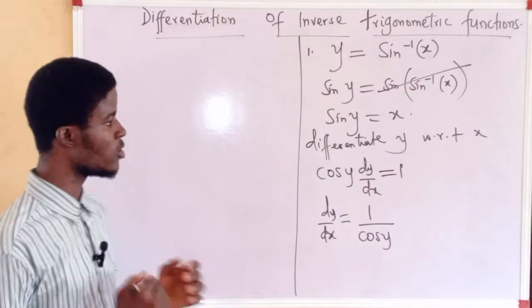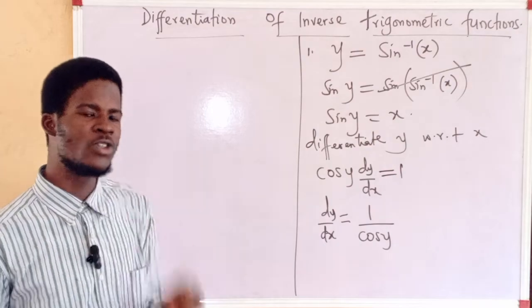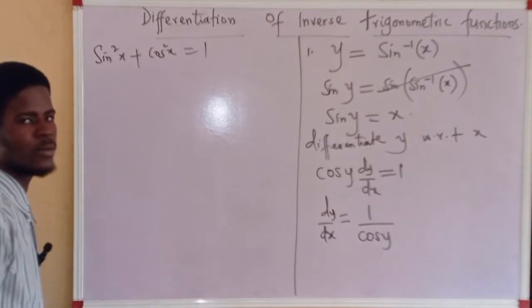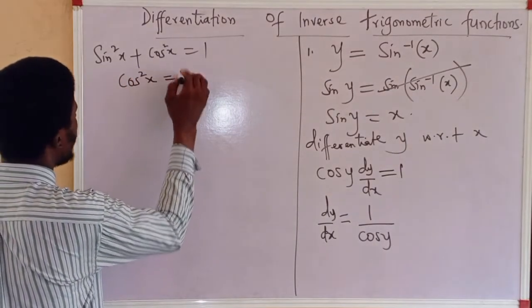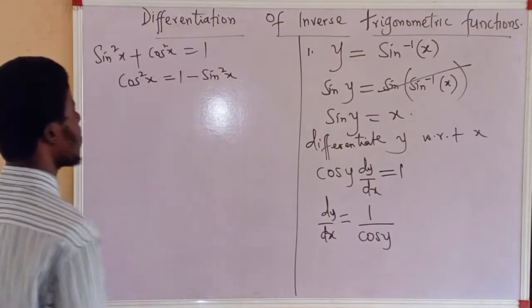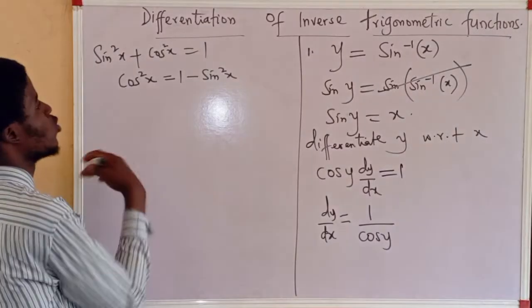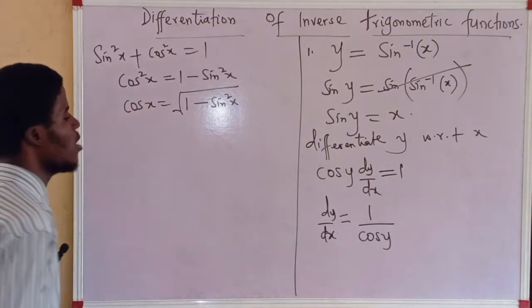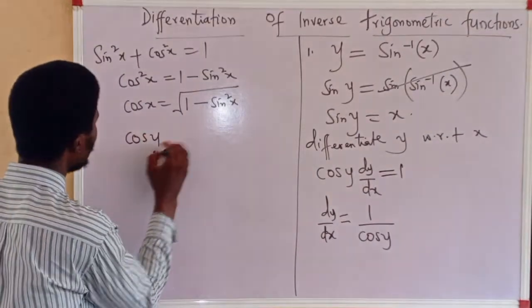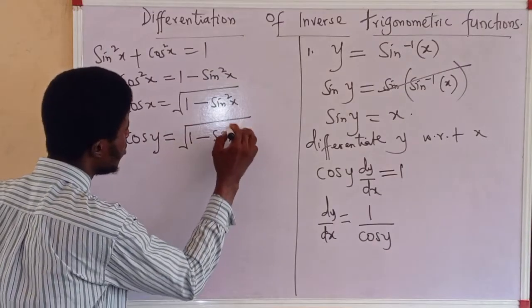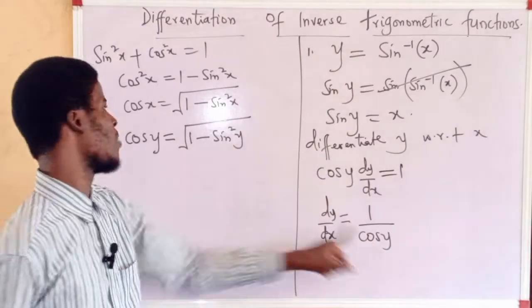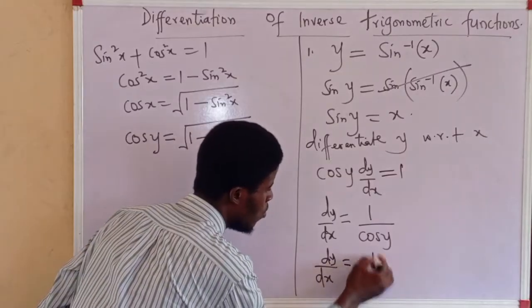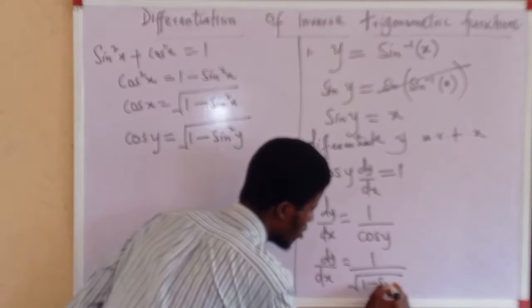This is not all. Remember, from trigonometry, sin²x + cos²x = 1. That means cos²x = 1 − sin²x. To make cos x the subject of the formula, take the square root of both sides: cos x = √(1 − sin²x). So for cos y, since we are dealing with y, cos y = √(1 − sin²y). In place of cos y, I'm going to write √(1 − sin²y). So dy/dx = 1 over √(1 − sin²y).